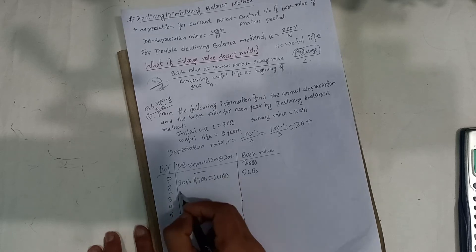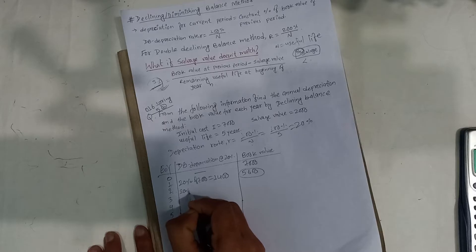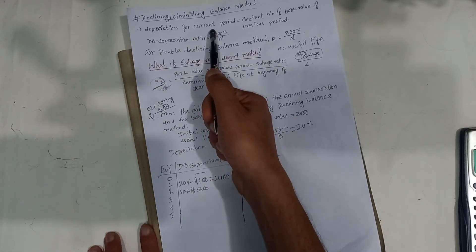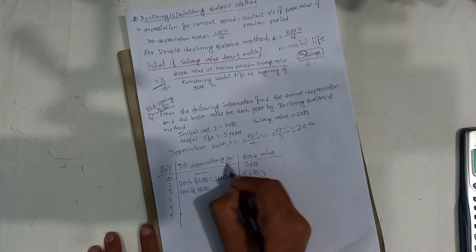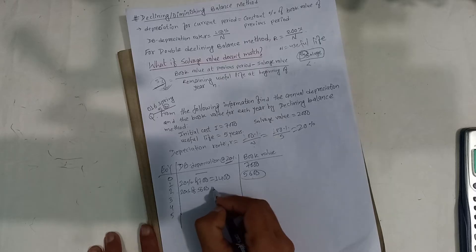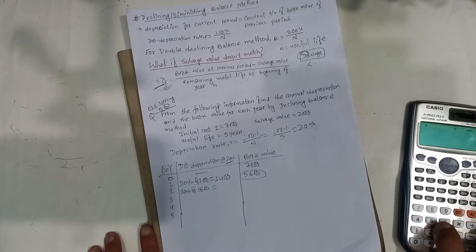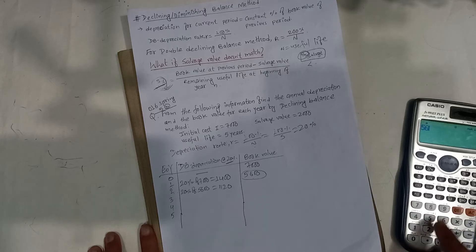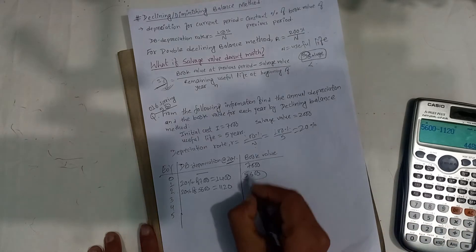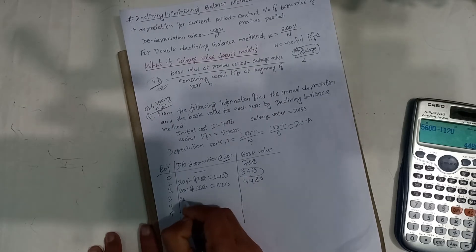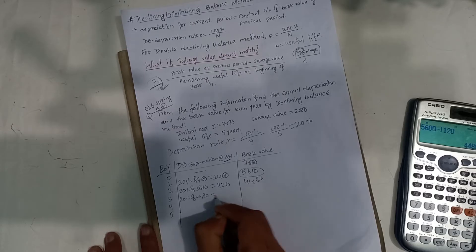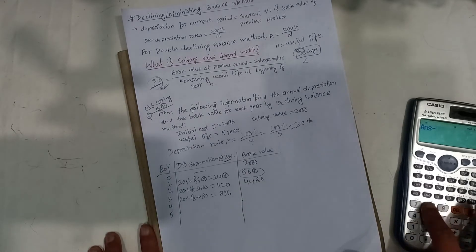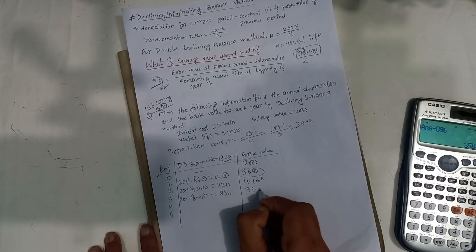Our first year depreciation is 20% of the initial book value. 20% of 5600 gives us 1120. Depreciation for the current period is a constant percentage of the book value of the previous period. So 20% of 5600 is 1120. Then 20% of 4480 gives us 896, and the book value becomes 3584.